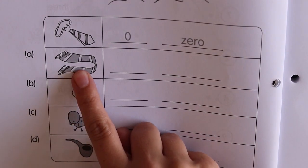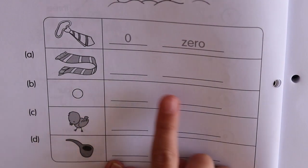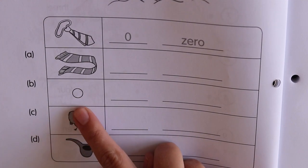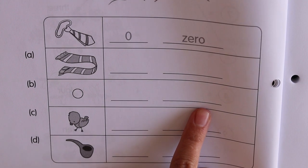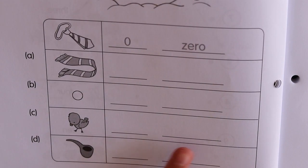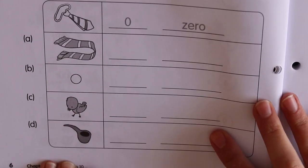Count how many scarves he has. Write the number and the word. Count how many buttons he has. Write the number and the word. Count how many birds are sitting on him. Write the number and the word. And the last one.